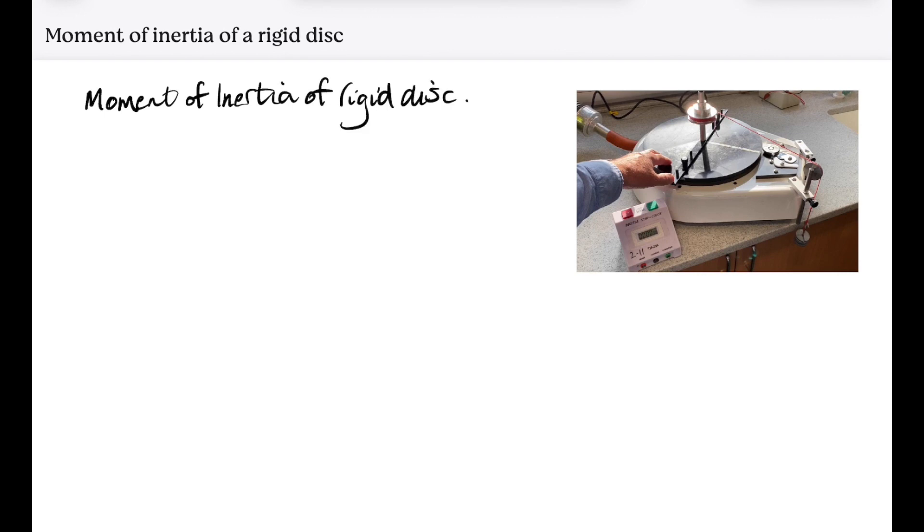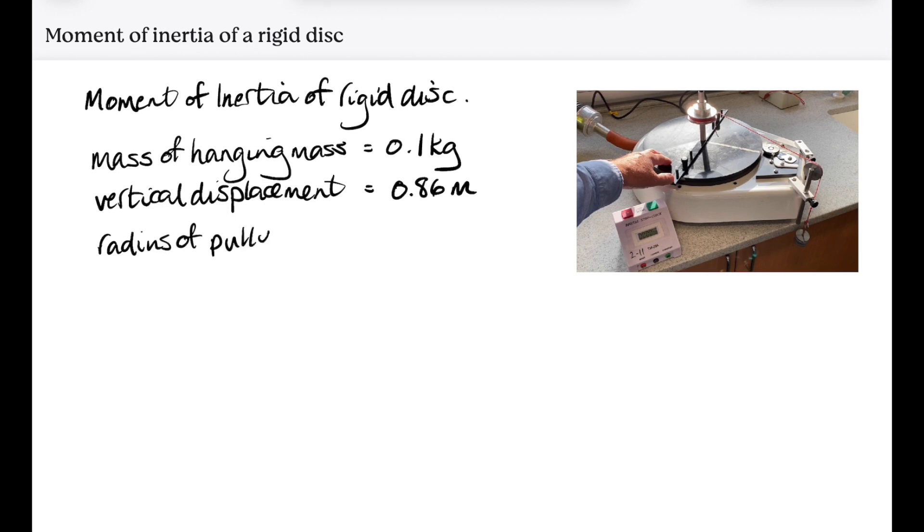So let's write down all our measurements first. So the mass of the hanging mass was 0.1 kilograms. It was 100 grams. The vertical distance it fell through was 0.86 meters. The radius of the pulley was 0.0275 meters, because it was half of the diameter. And the radius of the big disk itself was 15 centimeters.